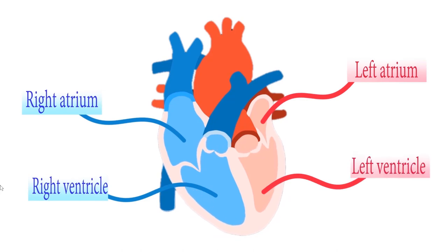The right atrium and the right ventricle holds and pumps oxygen-rich blood, while your left atrium and left ventricle holds and pumps oxygen-rich blood.